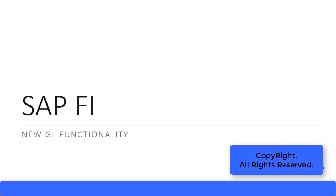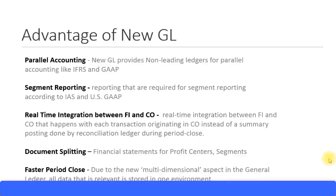Let's look at the NewGL functionality in SAP Financial Accounting. SAP introduced NewGL with ERP version 5 to overcome some of the disadvantages of using the classic GL. In your SAP IMG configuration menu path, you would see there's an option called Financial Accounting and Financial Accounting New. That Financial Accounting New, which we've been doing all of our configuration, is the NewGL.